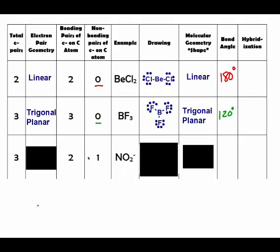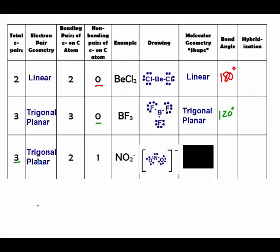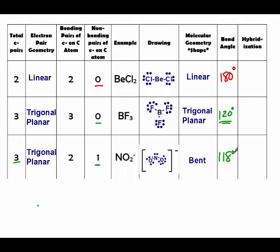If we have two atoms and one lone pair — so three sets of electrons coming off — the electron pair geometry is still trigonal planar, but because there is a lone pair, the molecular shape will be different. We don't see the lone pair in the structure, only its effects. Looking at those two oxygens, they're not linear — they're bent. The bond angle should be close to 120 degrees, but a lone pair repels more than an atom, so replacing a fluorine with a lone pair brings the bond angle down by 2 degrees to about 118 degrees.